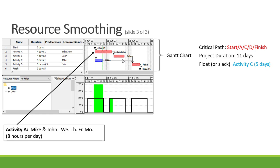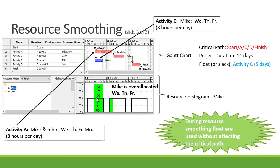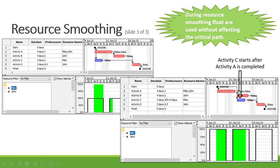Looking at our allocation of resources: for activity A we've allocated Mike and John for Wednesday, Thursday, Friday and Monday, with an eight hour working day. For activity C we've allocated Mike working Wednesday, Thursday and Friday. From our resource histogram we can see that Mike is over allocated for Wednesday, Thursday and Friday, working eight hours on both activity A and C — therefore 16 hours per day. In order to smooth out the time allocated for Mike, we're going to make use of the float of activity C, and move activity C to start after activity A is completed, smoothing out the time for Mike so he's only working eight hours per day.